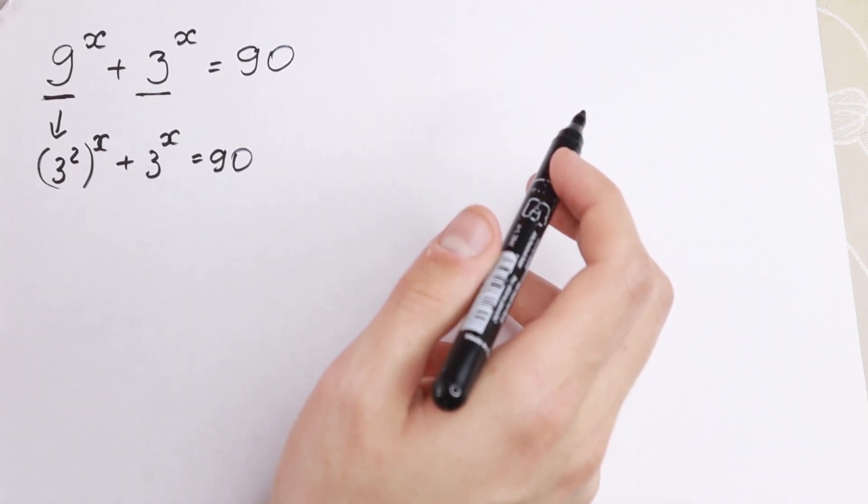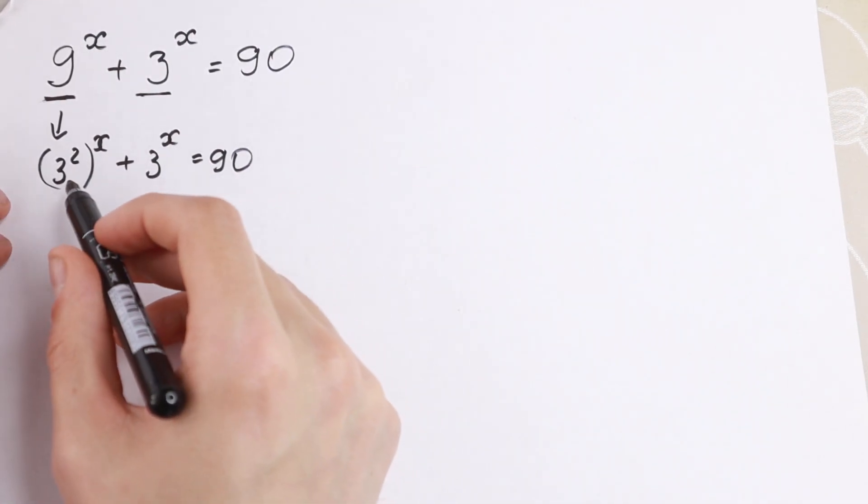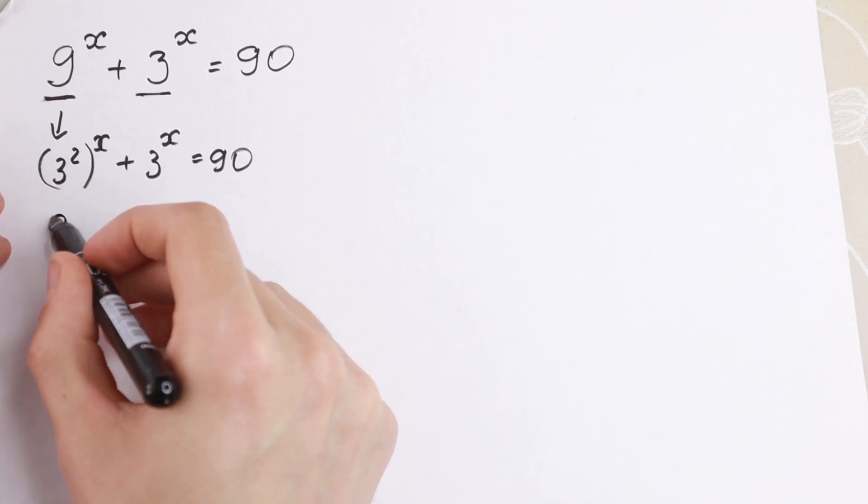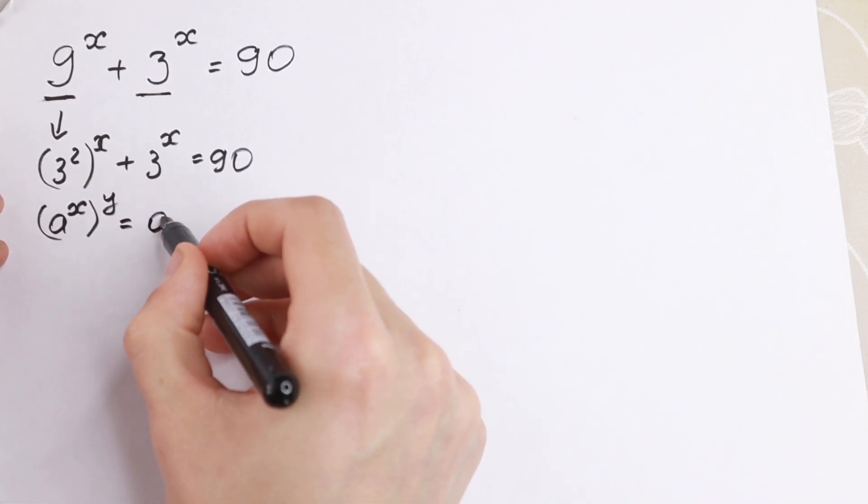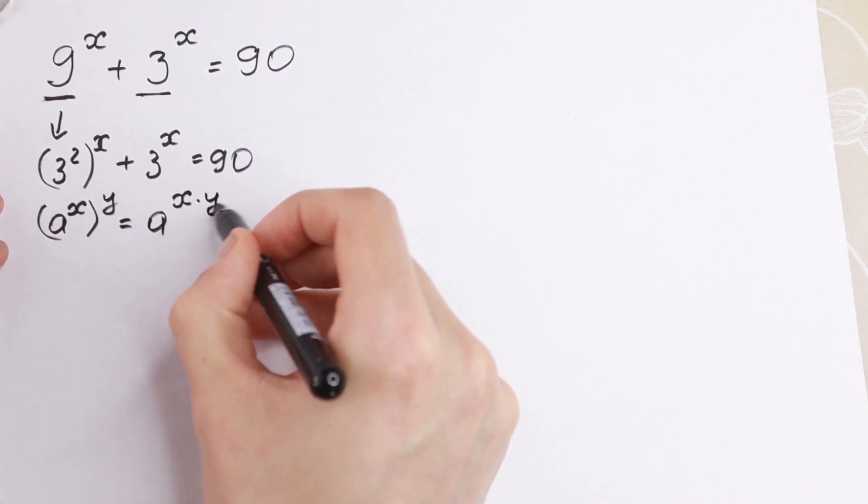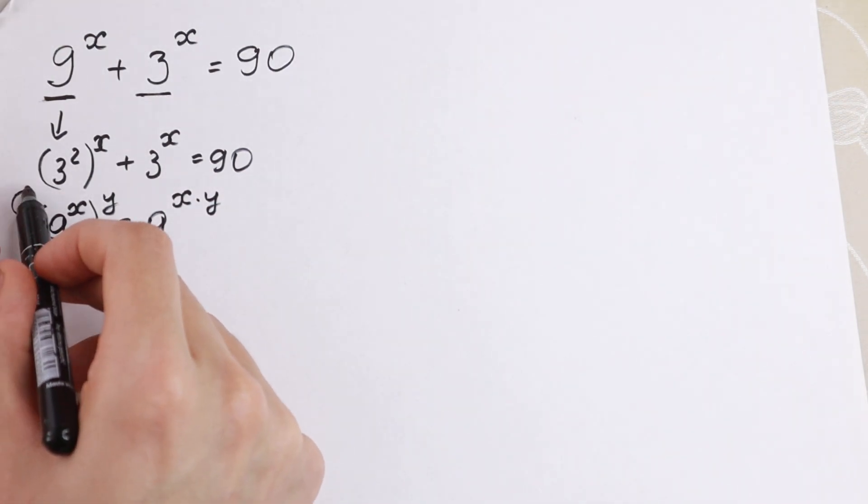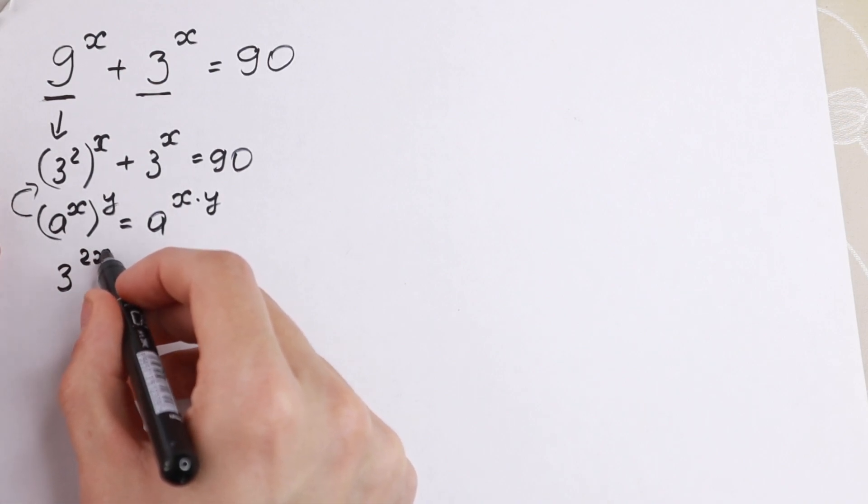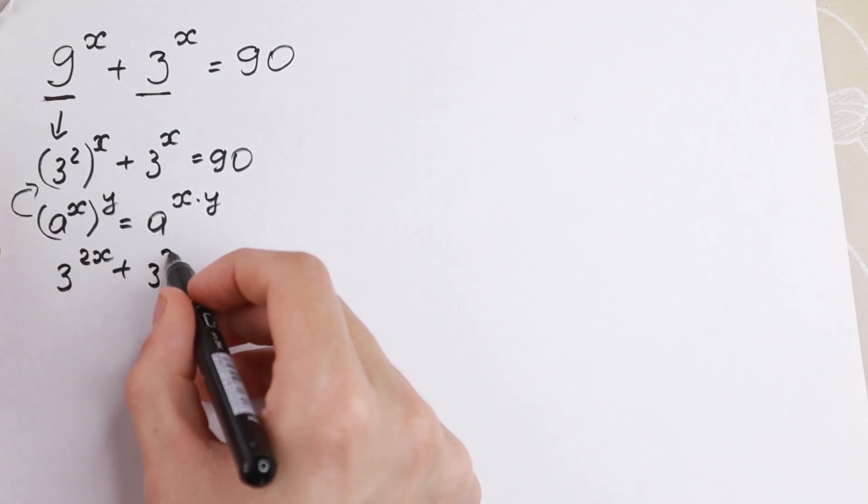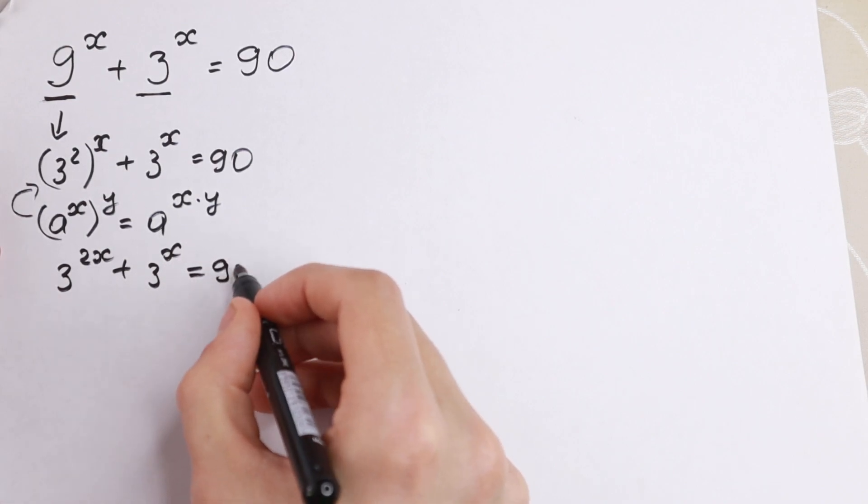We need to know about the rule of interchange. So take a look what I'm going to do. We can multiply this because if we have a to the power x raised to the power y, we can write it as a to the power x times y. So using this logic we can write this one as 3 to the power 2x plus 3 to the power x equal to 90.